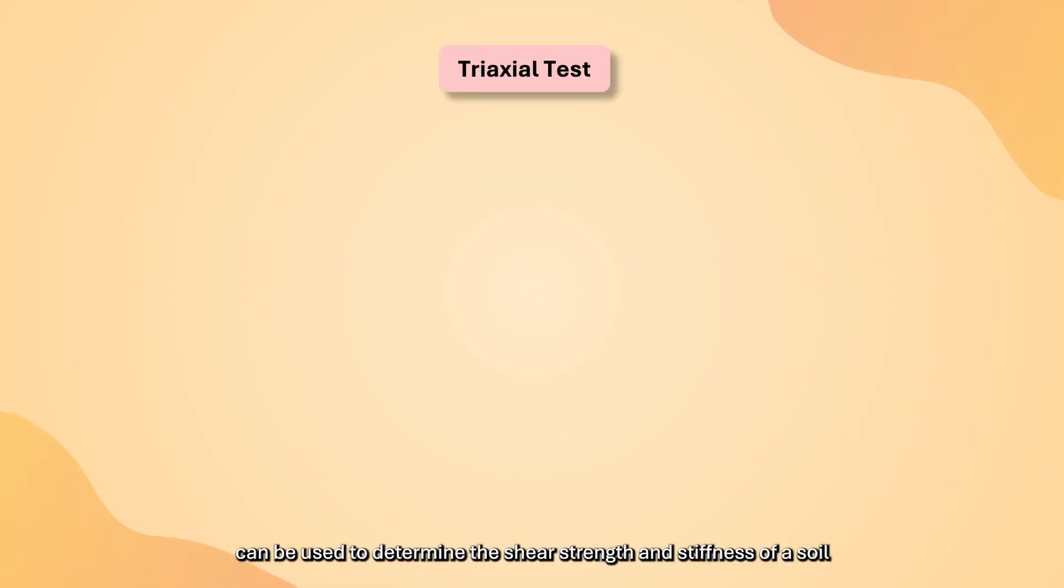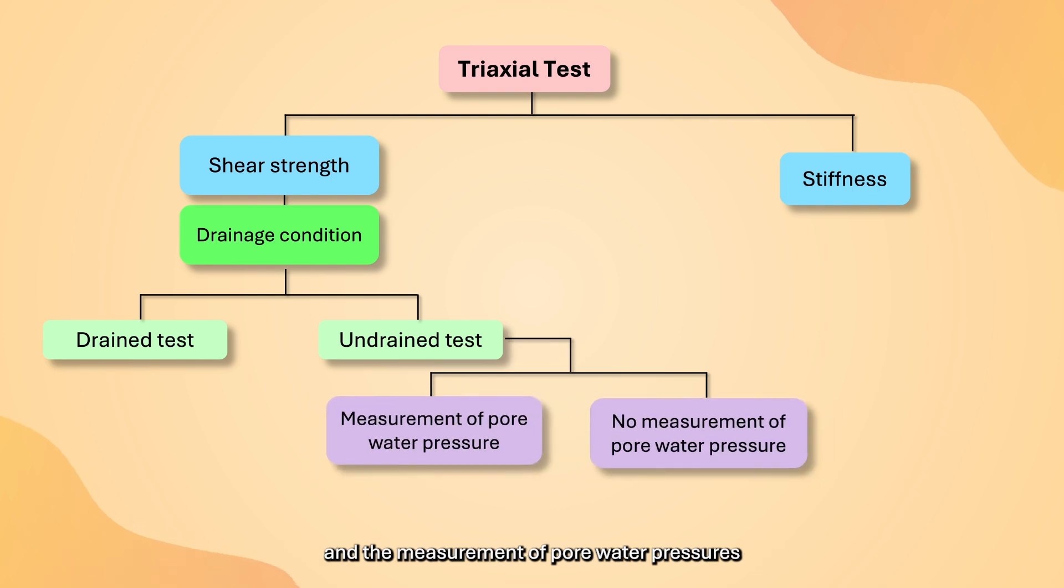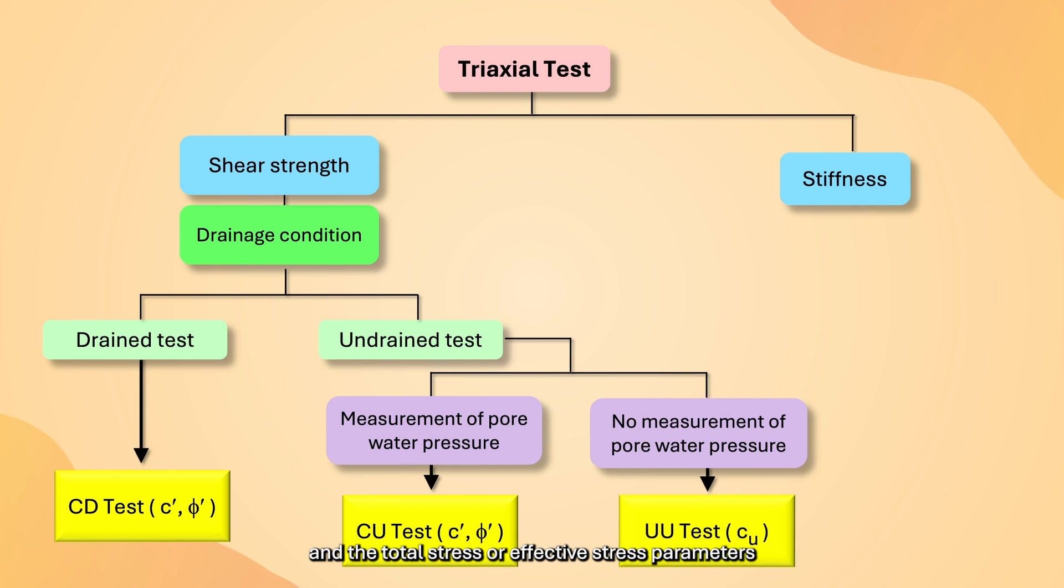Triaxial test can be used to determine the shear strength and stiffness of a soil. Depending on the type of test, control of specimen drainage and the measurement of pore pressures may be carried out, and the total stress or effective stress parameters can be obtained from the test results.